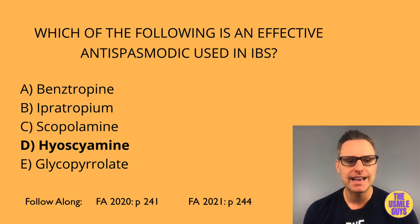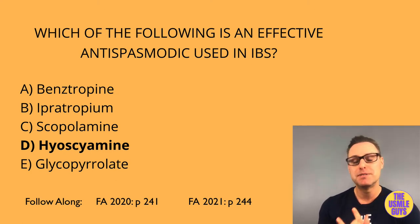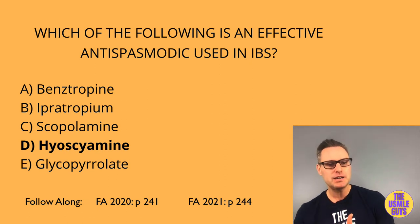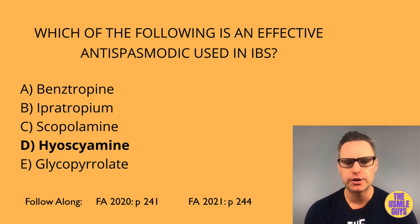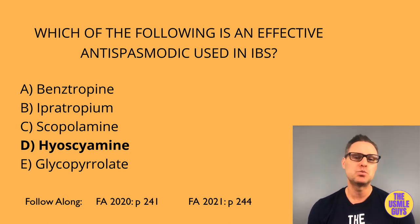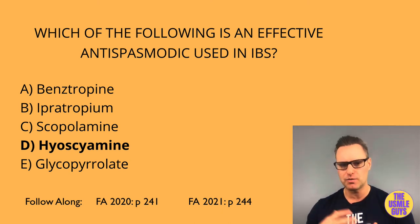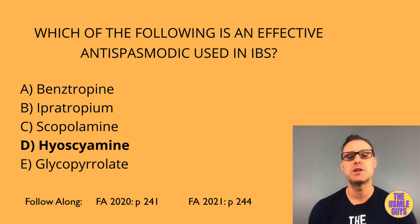The correct answer here is D, hyoscyamine — and we can add dicyclomine to the list for IBS as well. Other muscarinic antagonists include: atropine, which produces mydriasis and cycloplegia; benztropine, used in Parkinson's disease and acute dystonia; glycopyrrolate, used preoperatively to reduce airway secretions and orally for drooling and peptic ulcers; ipratropium and tiotropium, used for COPD and asthma; oxybutynin, which reduces bladder spasms and urge incontinence in overactive bladder; and scopolamine, used for motion sickness.